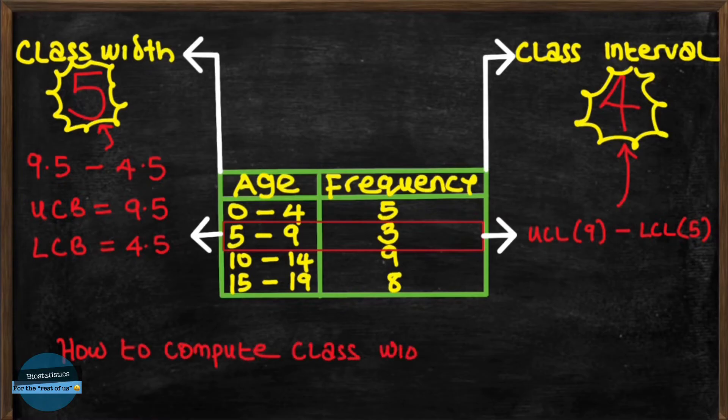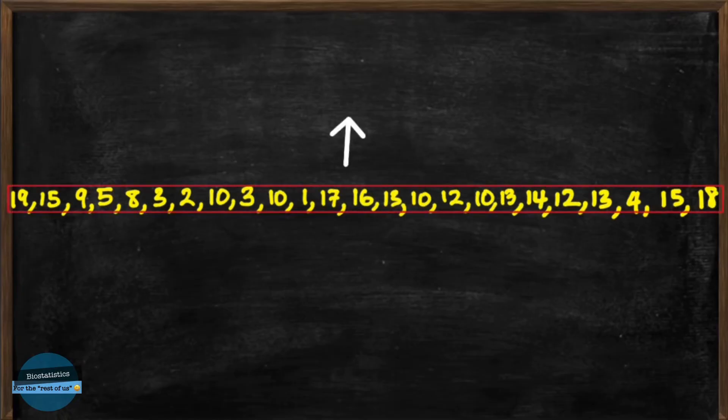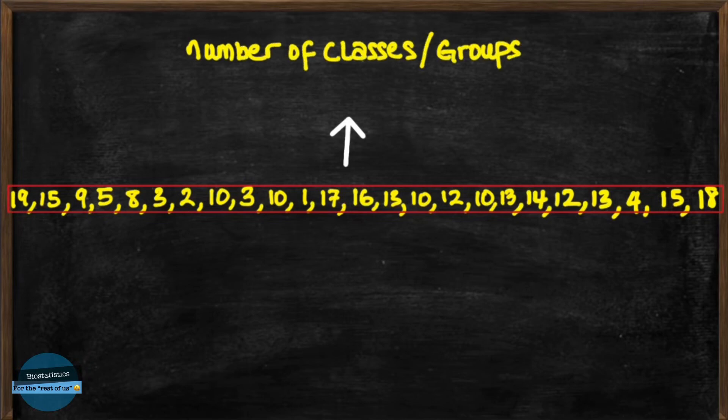how is the class width computed when all you have is the raw data? Let's look at this data with 25 ages. To put this into a group frequency distribution, we need to first know the number of classes or the number of groups. And we can know that easily by applying the Sturges formula.